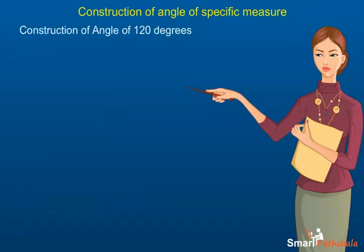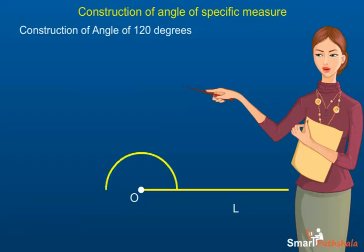2. 120 degrees. Step 1: Draw a line L of any measure. Step 2: Mark a point O on it. Step 3: With O as center, draw a semicircle of any radius. Let the semicircle cut the line at A. Step 4: With A as center and the same radius, draw an arc that cuts the semicircle. Let it cut at B. Step 5: With B as center and the same radius, cut the semicircle at point C. Step 6: Join OC. Angle AOC is the required 120-degree angle.